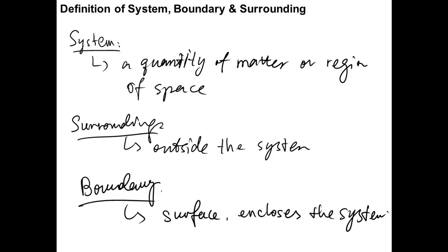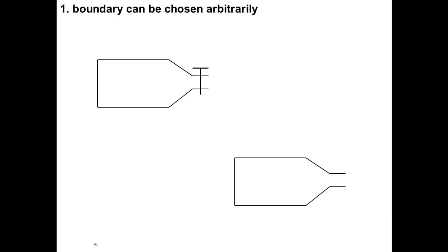Now there are some points which must be underlined. First, boundary can be chosen arbitrarily. It also means the boundary may be real or imaginary.